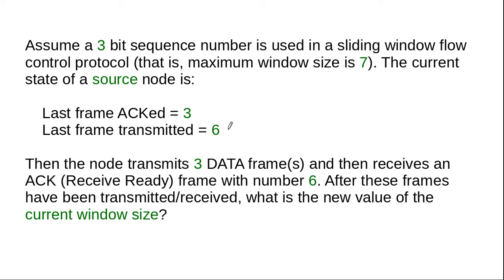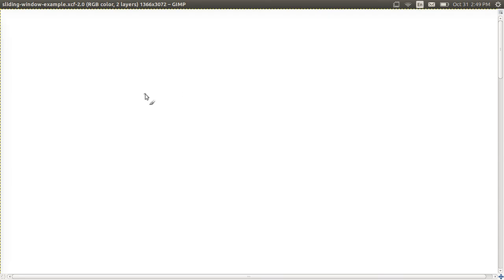Let's try and draw that and see what that means. Firstly, last frame ACK equals 3. So we can think that if the last frame ACK is 3, then that means frame with sequence number 3 and frames before that, 2, 1, 0,